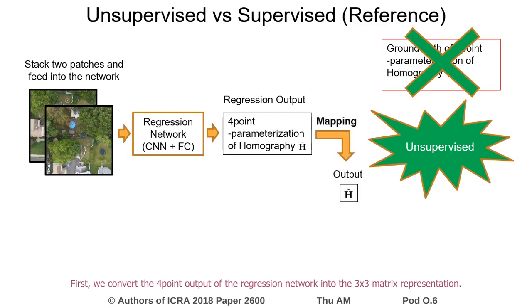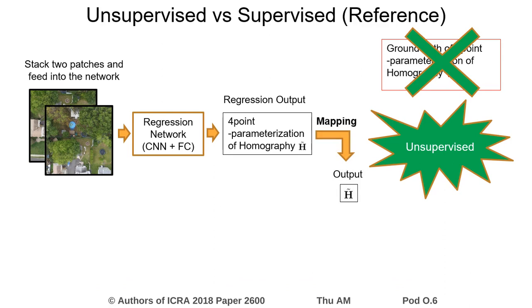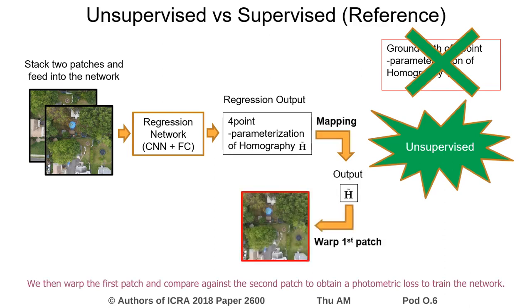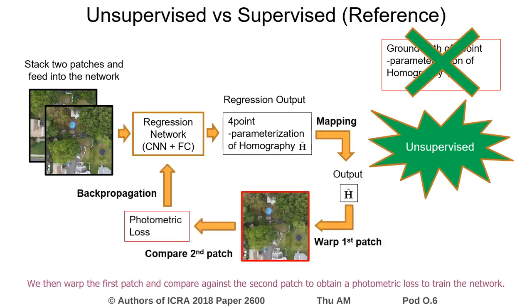First, we convert the four-point output of the regression network into a 3x3 matrix representation. We then warp the first patch and compare against the second patch to obtain a photometric loss to train the network.